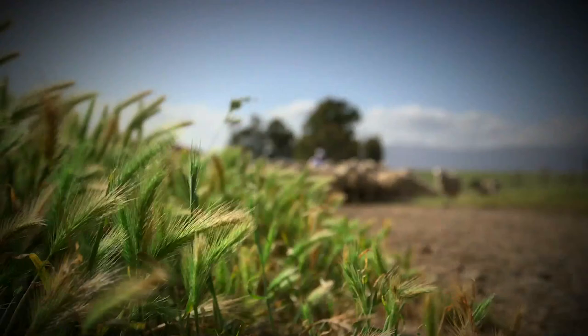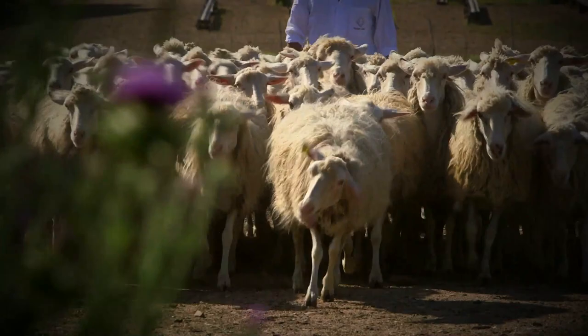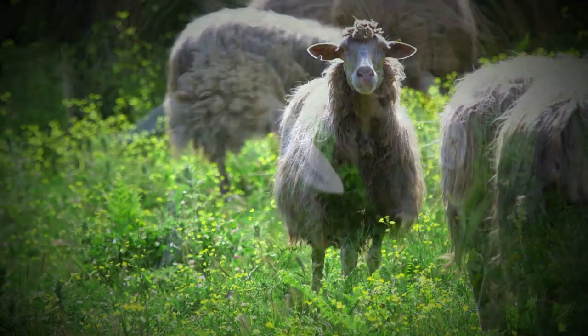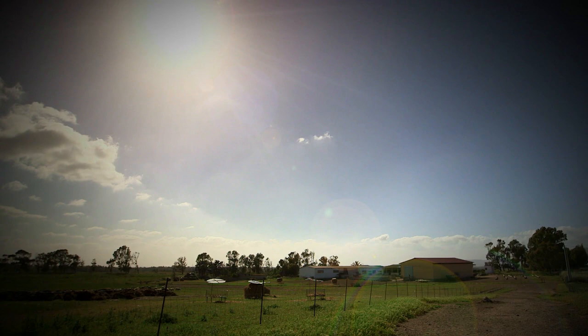Pecorino Romano PDO is made exclusively from fresh whole sheep's milk, taken from sheep raised in wild and semi-wild pasture land. Ever since ancient Roman times, the Pecorino Romano tradition has been a tale of simple ingredients, natural harmony and respect for the land.